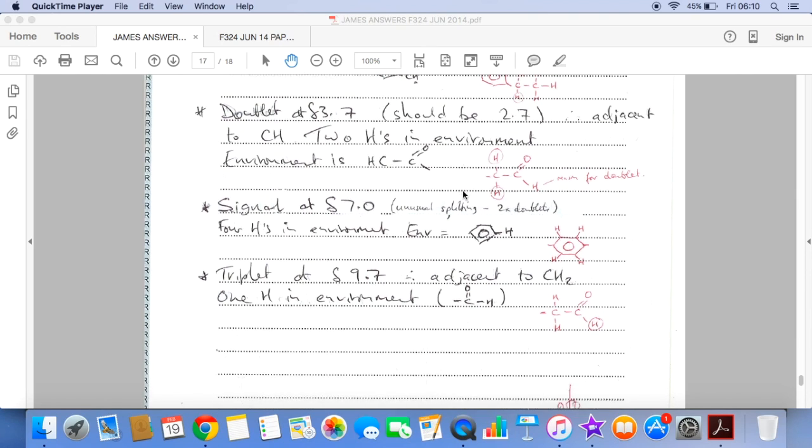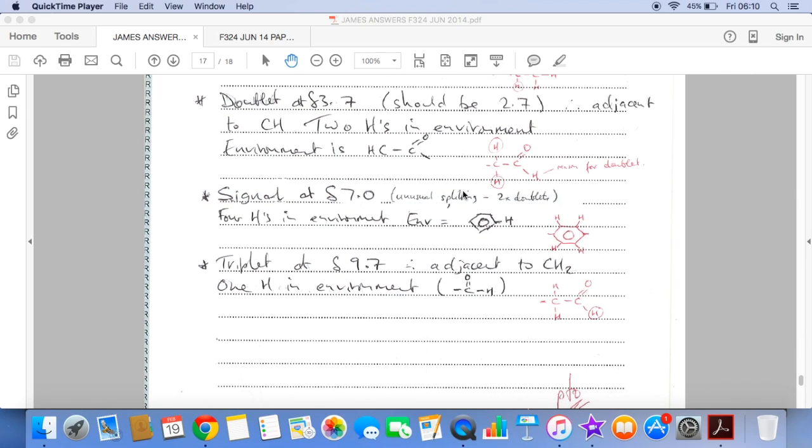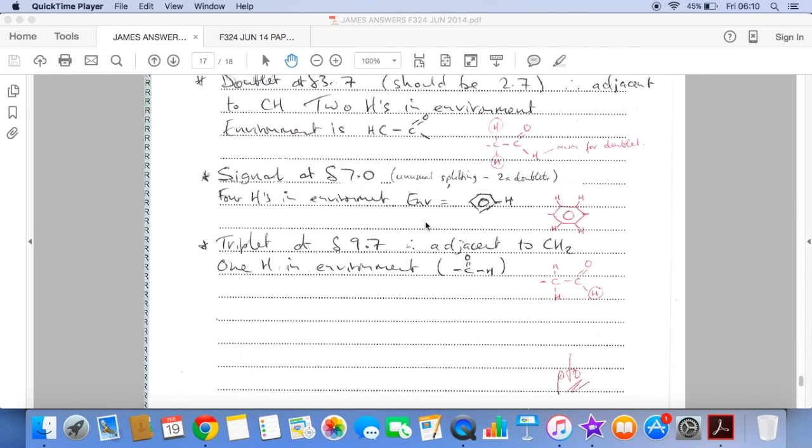The unusual peak at 7. So you can see I've sort of written there, unusual splitting at what looks like two doublets. What we've actually got there, we've got a peak area of 4, which means we have 4 hydrogens in the environment. And the environment corresponds with a benzene hydrogen, so those four hydrogens must be four hydrogens of a benzene ring. And in the actual mark scheme, it makes no reference to the splitting pattern in that peak, so you're not expected to work out the splitting pattern there.